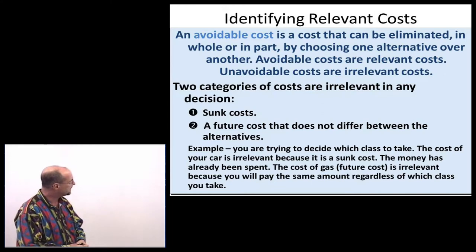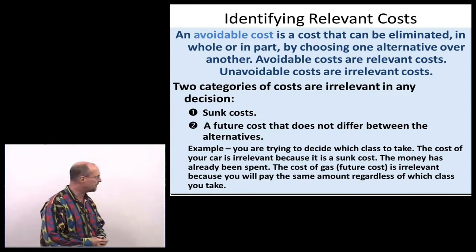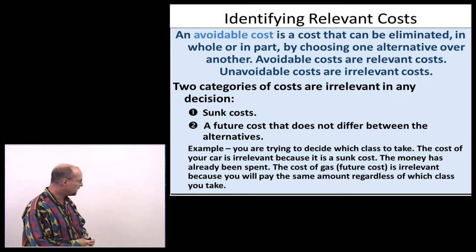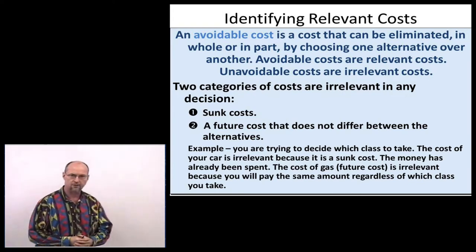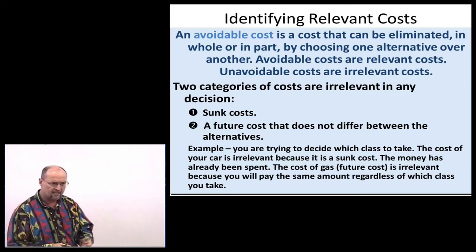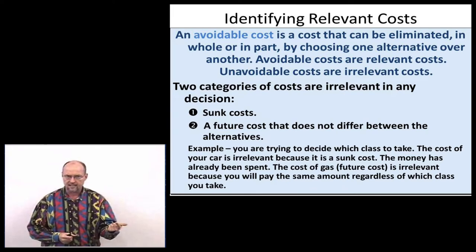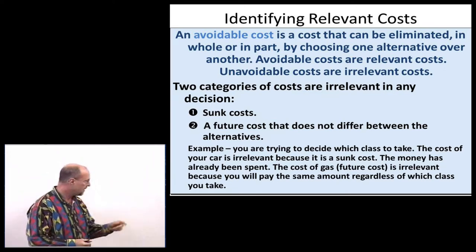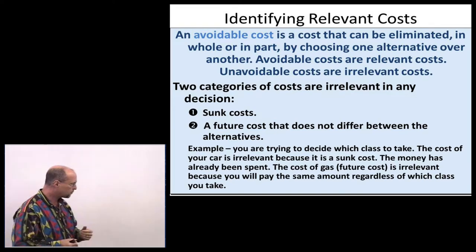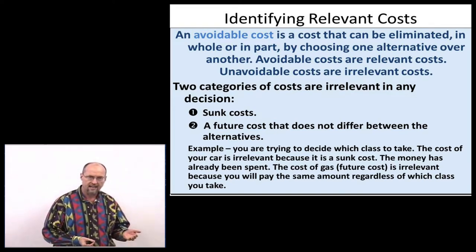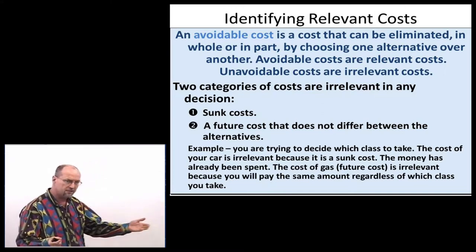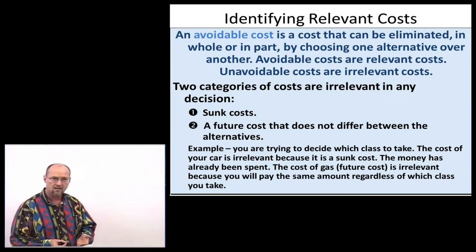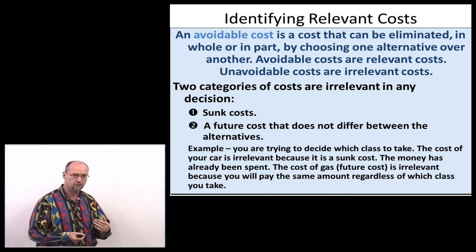If we can avoid a cost, it's relevant. If we can't avoid a cost, it's irrelevant. Sunk costs and certain future costs that won't differ are irrelevant. For example, if you're deciding which class to take, relevant issues include the schedule, the instructor, difficulty, and required materials. Your car is irrelevant — it's a sunk cost. You've already bought it, and it has no effect on the decision. The cost of gas to drive to campus is also irrelevant if both classes are on campus.